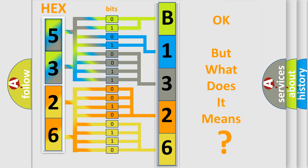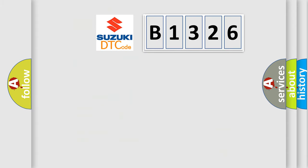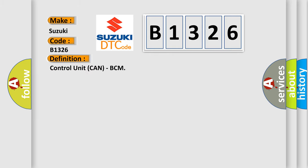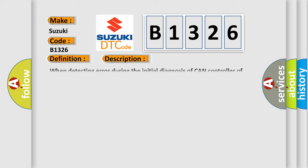The number itself does not make sense to us if we cannot assign information about what it actually expresses. So, what does diagnostic trouble code B1326 mean? Interpreted specifically for Suzuki car manufacturers, the basic definition is: control unit CAN, BCM. This is a short description of this DTC code: when detecting an error during the initial diagnosis of the CAN controller of BCM.